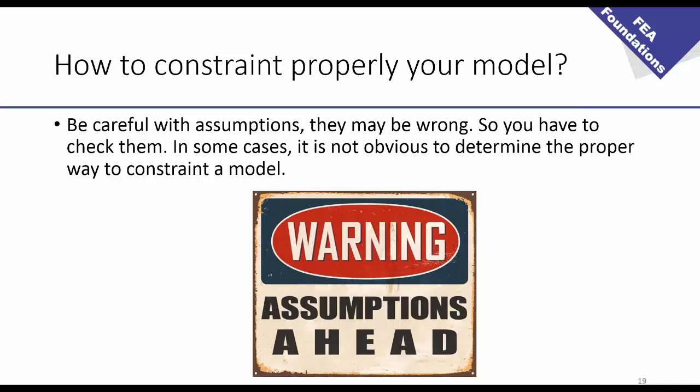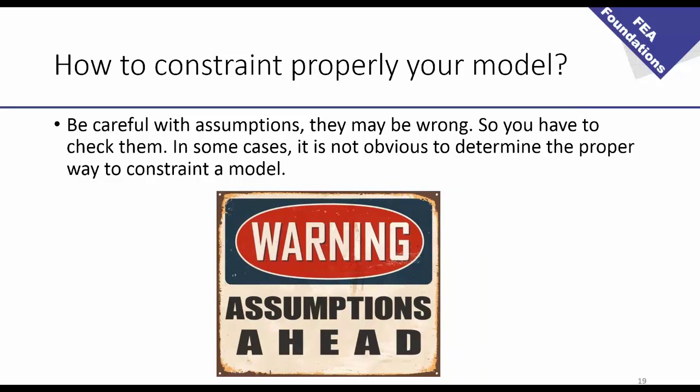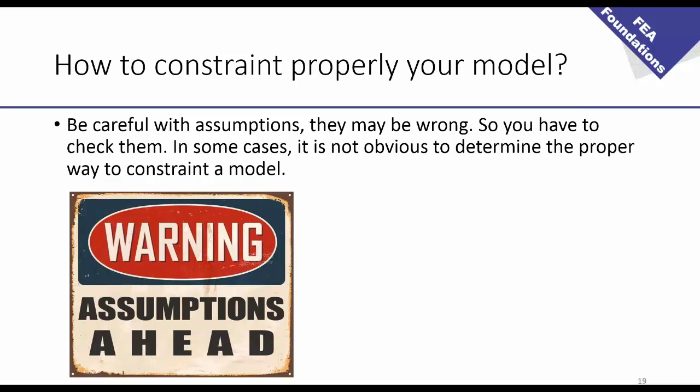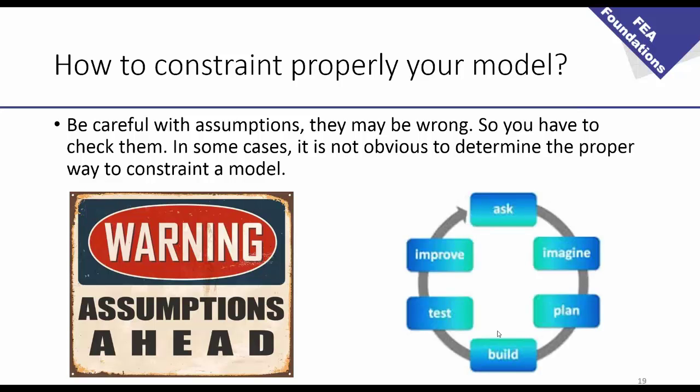So, you have to do some trial errors. So, basically this is what I call the improvement circle. So you have to ask yourself, you have to imagine how it should be constrained, you have to plan how you should constrain it, then you have to do it to do the test, and if it's not satisfactory you have to improve and you have to do that over and over again until you get something that works. That's how real engineers are working. Okay. Thank you very much.